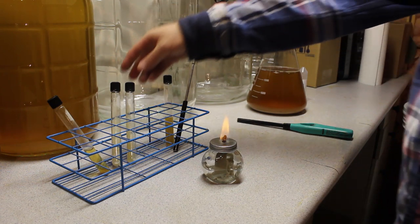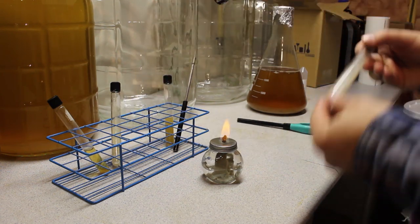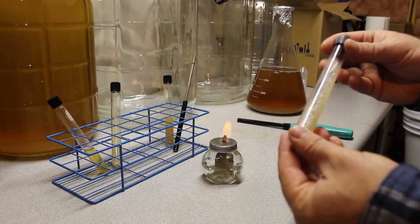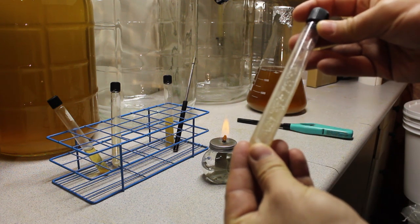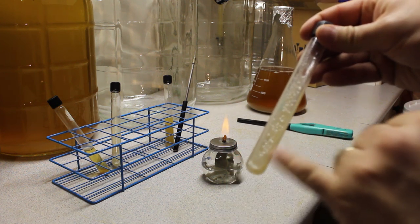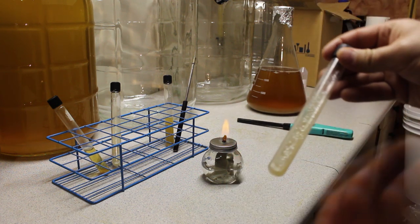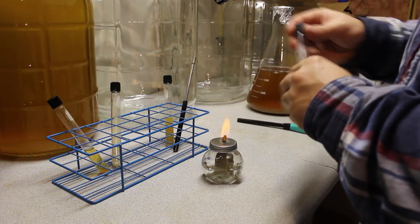So the next thing to do is to transfer from a slant, and this is actually an even easier procedure. And hopefully you can see here in the slant I have a lot of good growth, nice strong growth, which makes this a good slant to take our yeast from.